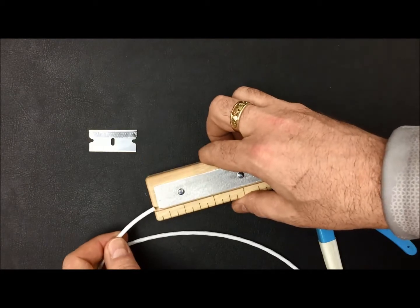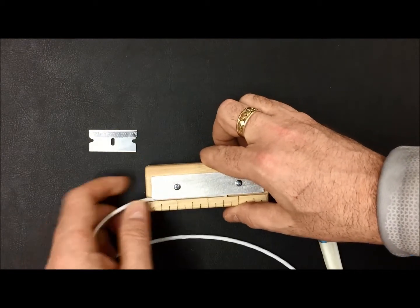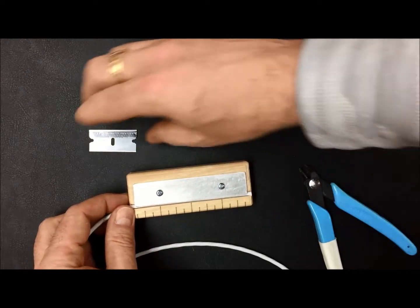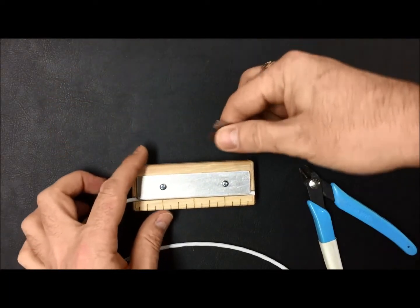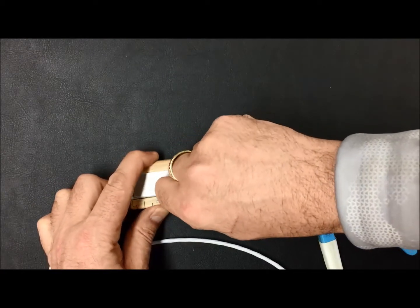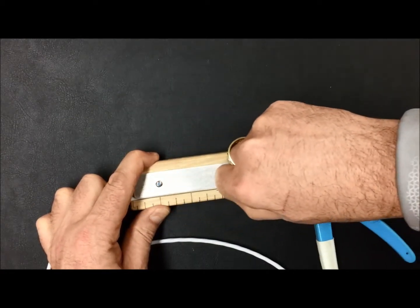You just take your shielded wire, insert it into the slot that's there, and it fits nice and snug so it's not going to fall off depending on the size of wire that you use. Take your razor blade, insert it in the slot right along the guide, however long you want to strip it, and cut a slot.